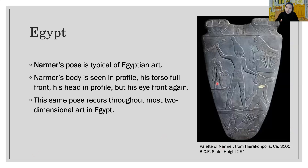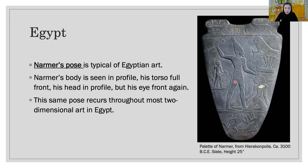This is Egyptian two-dimensional art. Most of Egyptian two-dimensional art repeats the same pose, called Narmer's pose. When depicting an important personage, the Egyptian artist strove to show each part of the body to best advantage so it could be read clearly by the viewer. Narmer's body is seen in profile, his torso full front, his head in profile, but his eye front again. This same pose recurs throughout most two-dimensional art in Egypt.